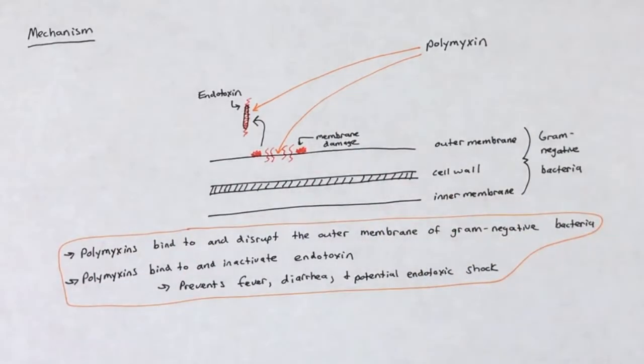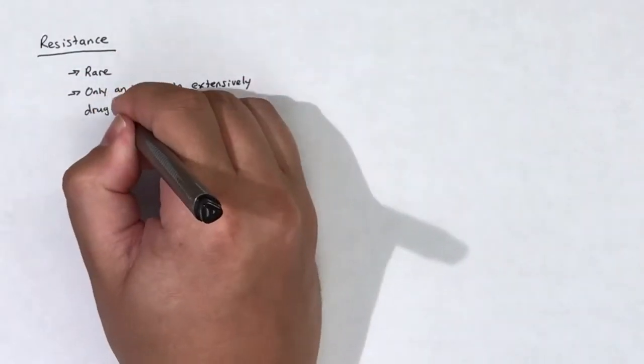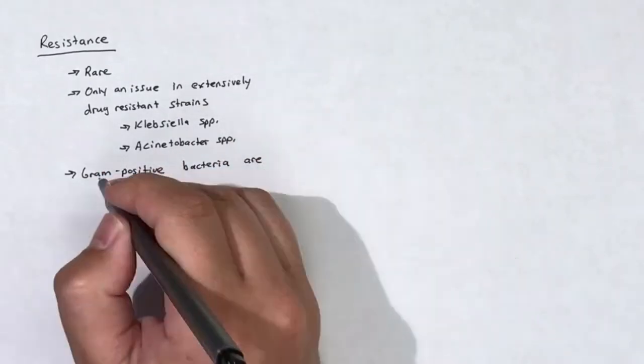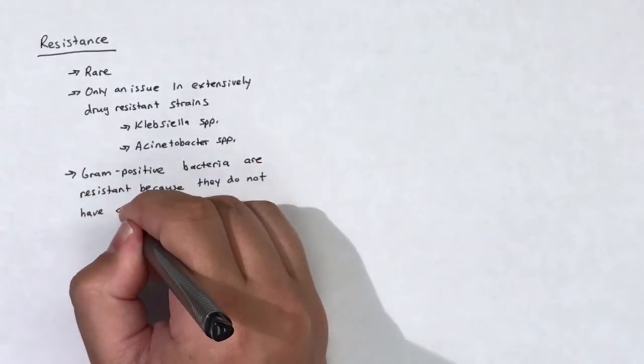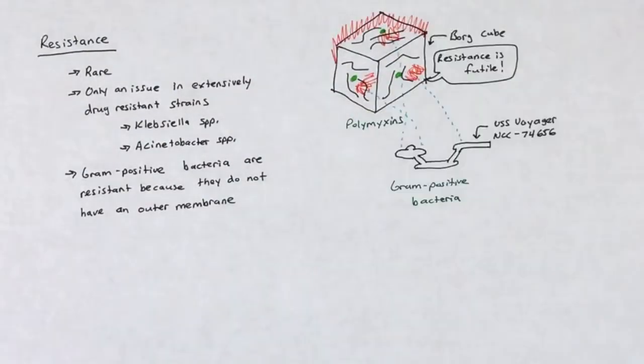Polymyxins are bactericidal. Resistance to polymyxins is rare and has only really become a problem in extensively drug-resistant strains of Klebsiella species and Acinetobacter species. Gram-positive organisms are intrinsically resistant to polymyxins because gram-positive bacteria do not possess an outer membrane like gram negative bacteria.